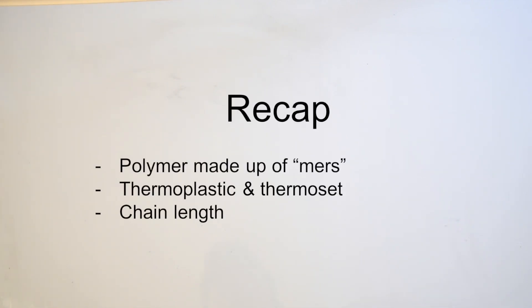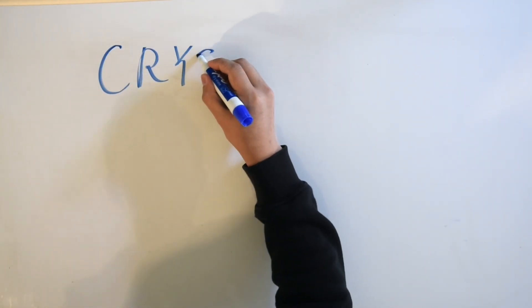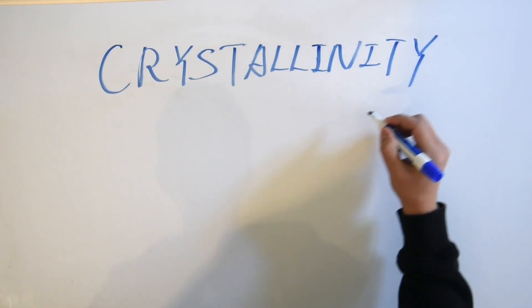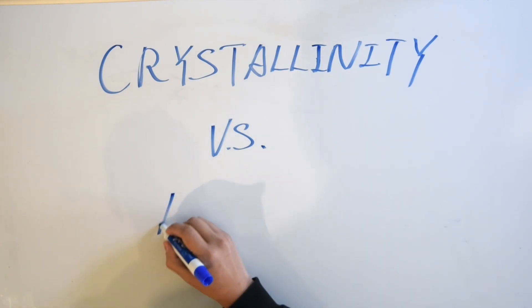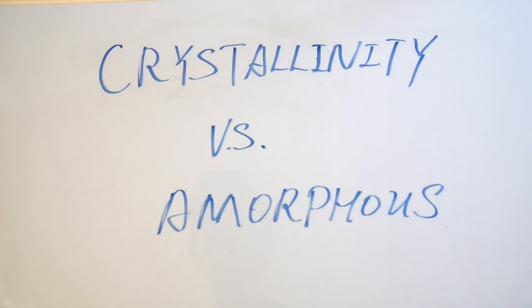Hello! Last time we talked about what polymers are made of at the macroscale and some basic properties of them. Today we will take a small step further and look at crystalline and amorphous structures as well as glass transition and melting temperatures.